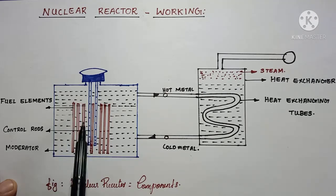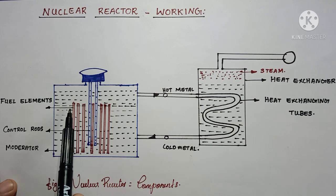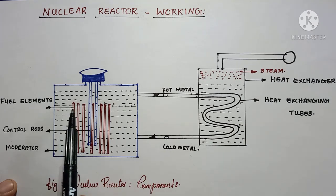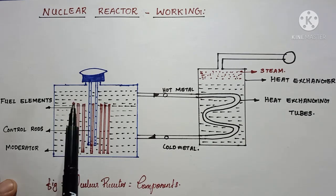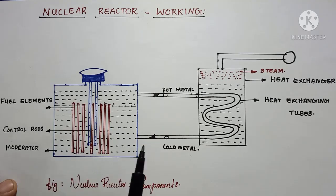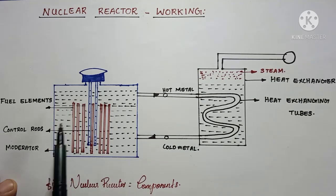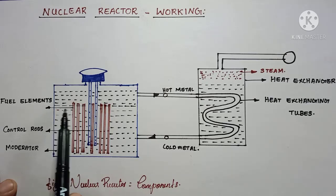Here you can see many number of fuel element rods — these red portions. These fuel elements are normally made up with uranium-235, uranium-238, or thorium, and that can be a fissile material.